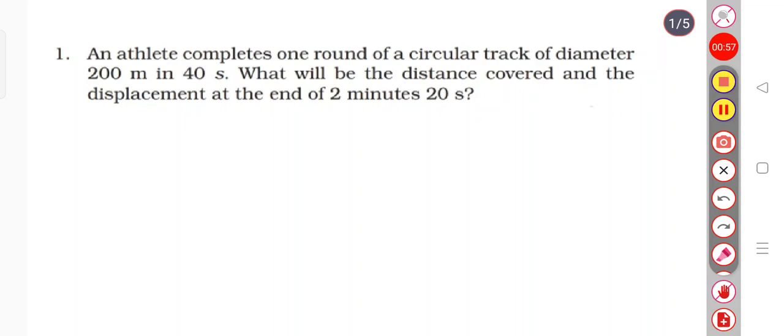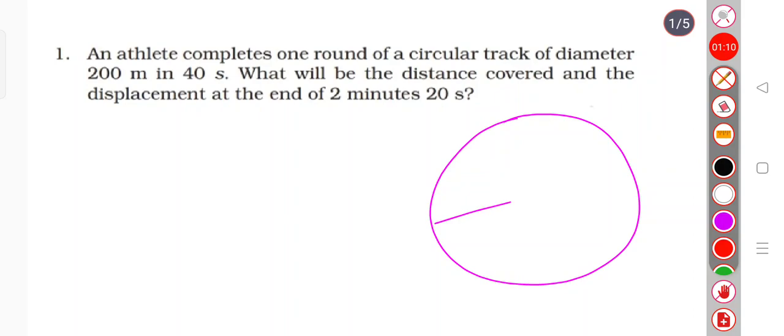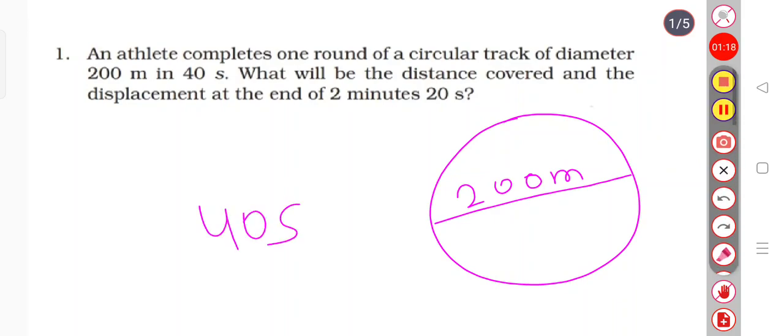So they are saying that an athlete on a circular track of diameter 200 meters will complete one round in just 40 seconds. So what will be the distance and displacement at the end of 2 minutes and 20 seconds?